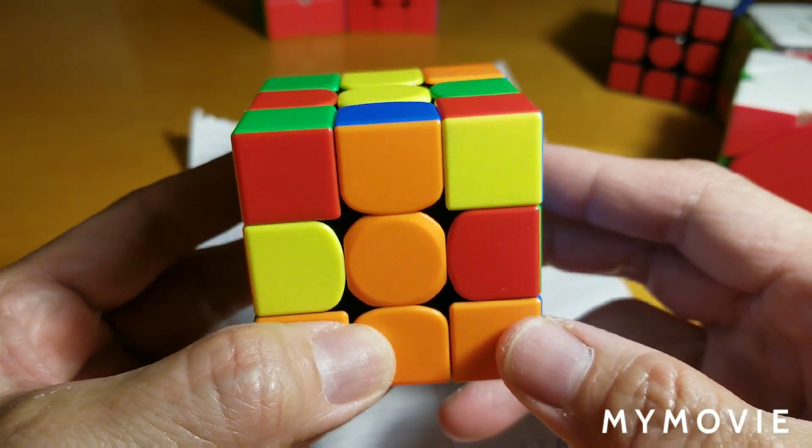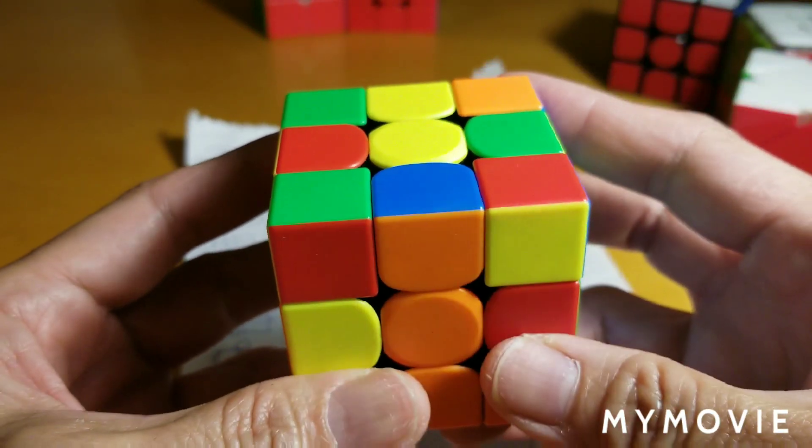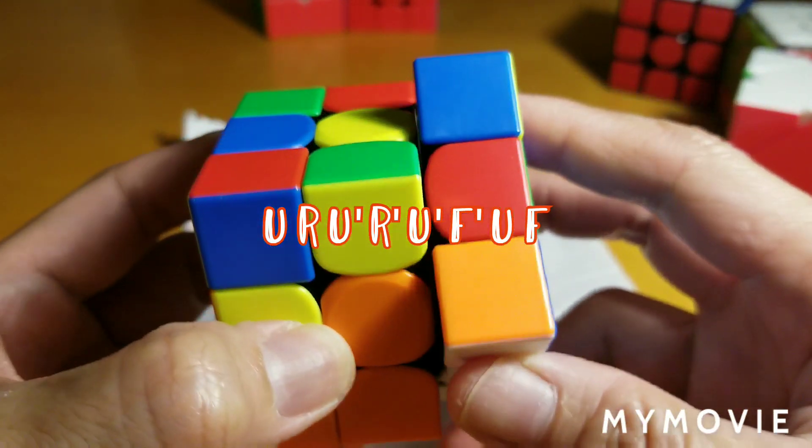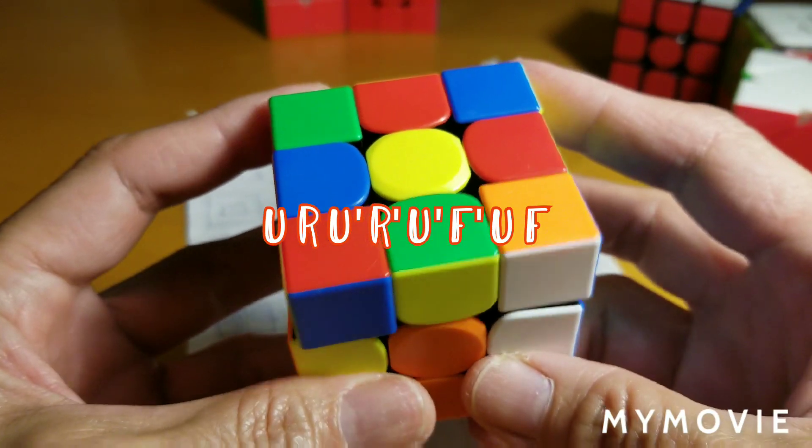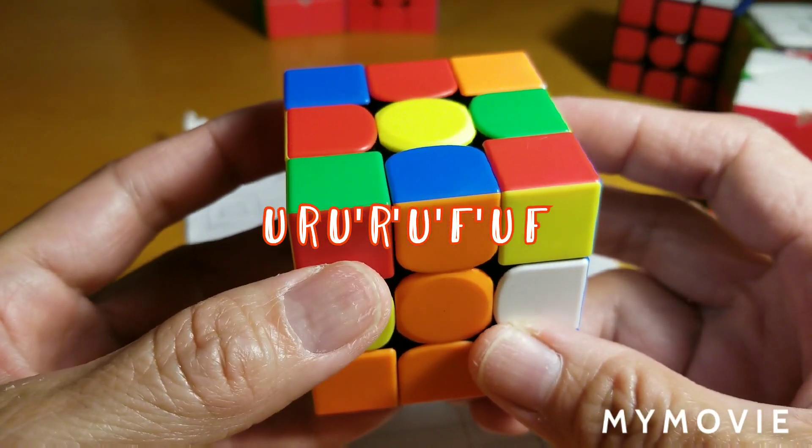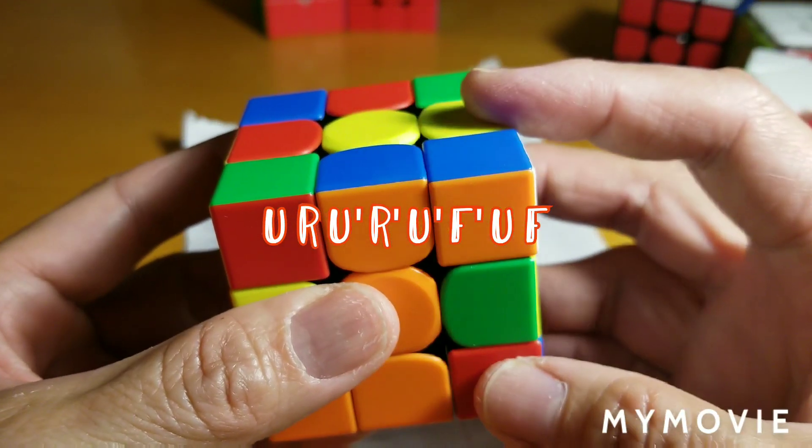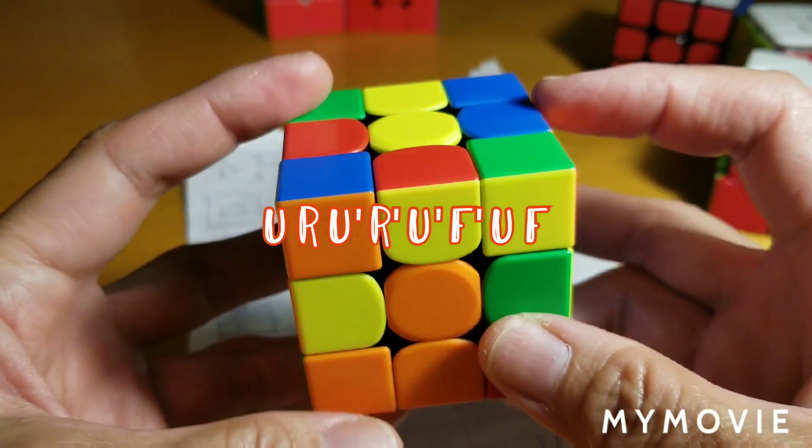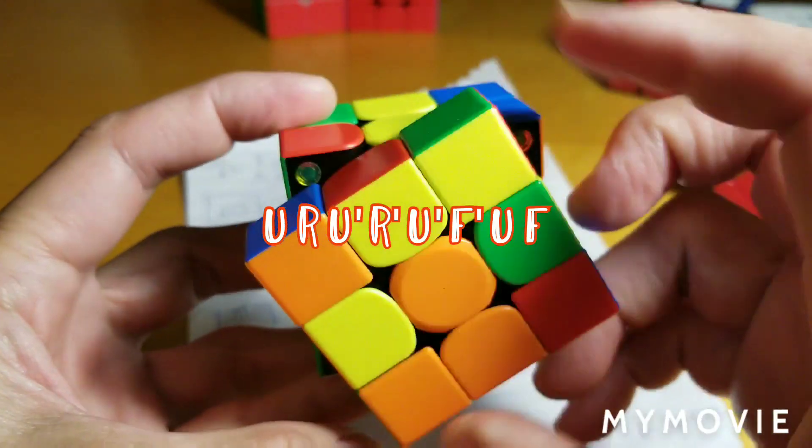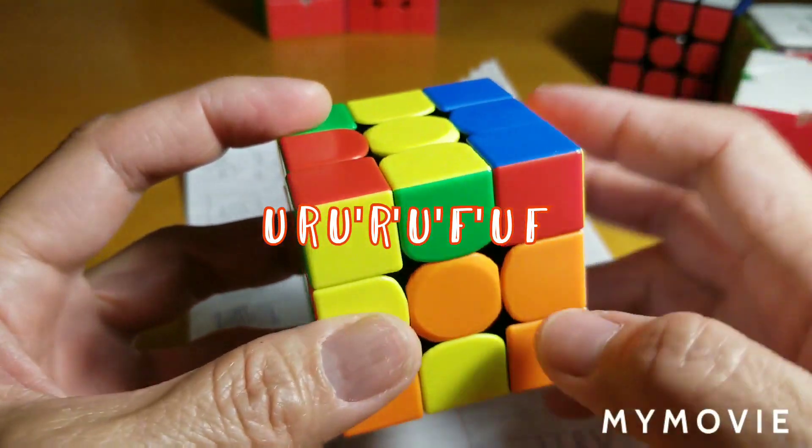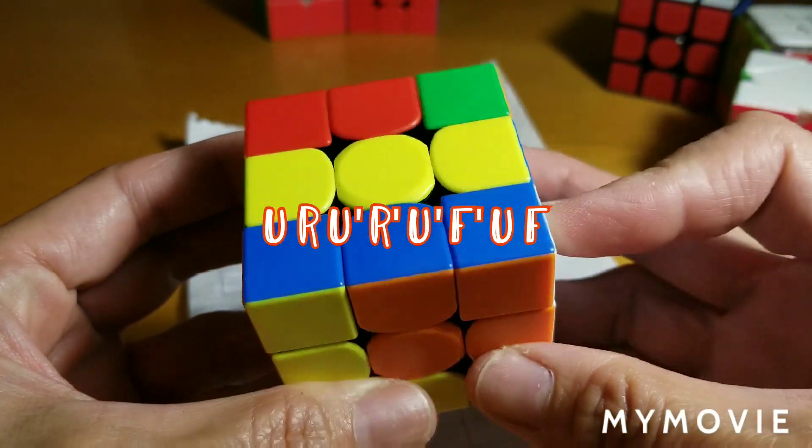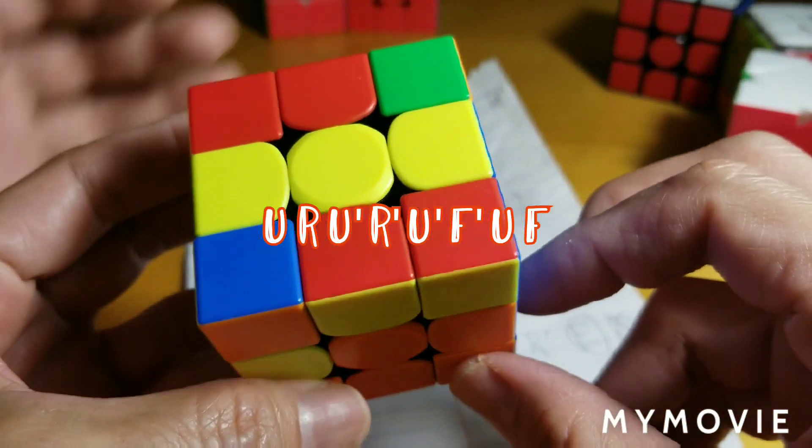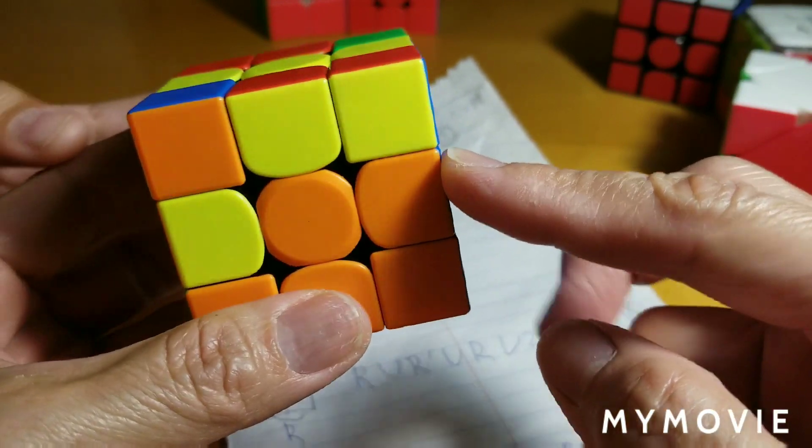So you do this algorithm. It's U. U. U is up clockwise. Okay, U. R. And that's this way. R. U prime. U prime. R prime. R prime. U prime. U prime. F prime. F. And that goes this way. U. U. F. F. Hey, look. Now you have the slot. This slot is solved.